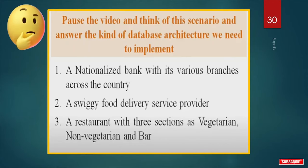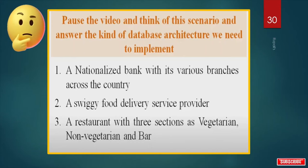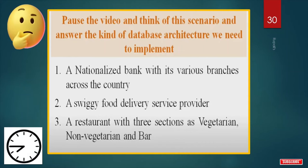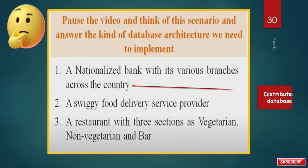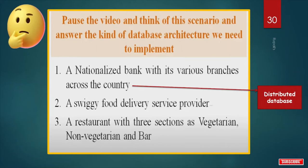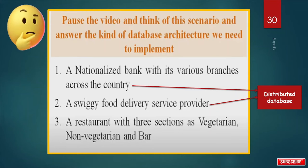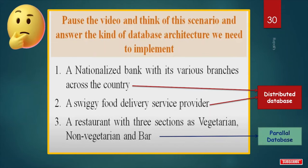Consider this scenario: a nationalized bank with various branches across the country — this is an example of a distributed database. A food delivery service provider — also an example of a distributed database. A restaurant with three sections (vegetarian, non-vegetarian, and bar) — this is an example of a parallel database.